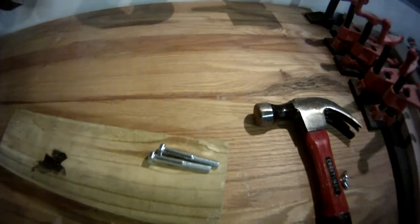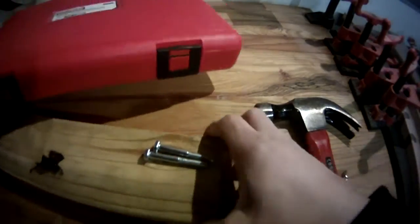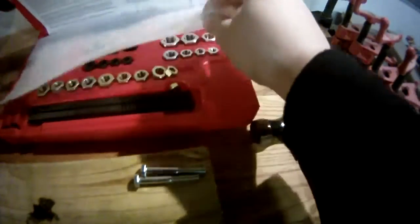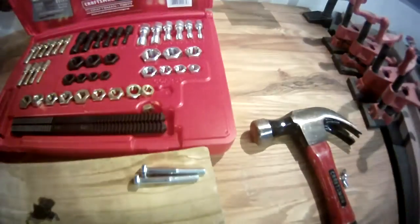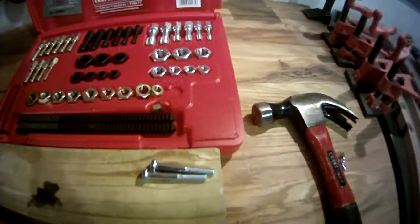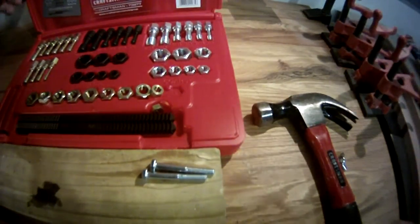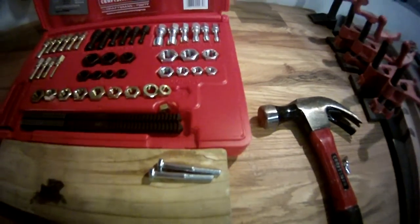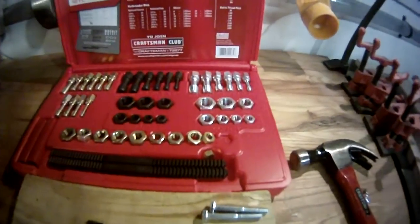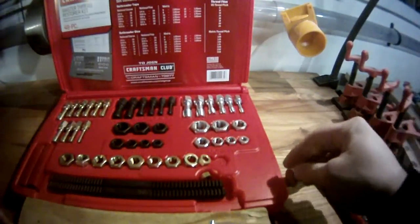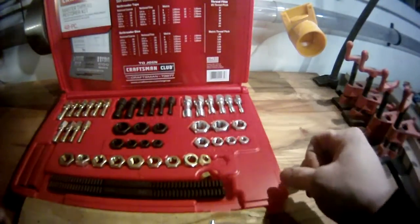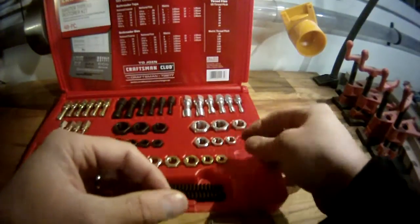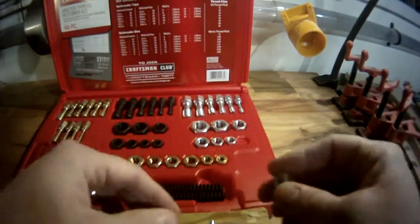This is a quarter-20 bolt, so I'm going to do the first one with the master thread restorer kit. Since this is a quarter-20, we're going to use the coarse thread out of our kit. That would be our quarter inch - let me find the quarter inch one. Here we go, we've got our quarter inch thread restorer.